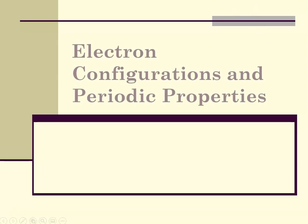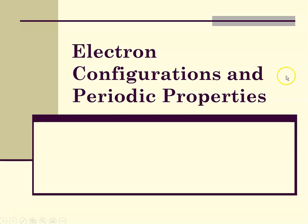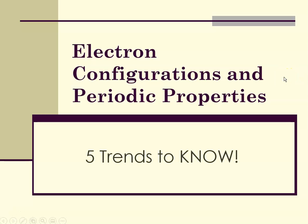Hello class, this is Ms. Augustine. We are still in Chapter 5, and today we're going to talk about electron configurations and how they affect periodic properties and the five trends you need to know.